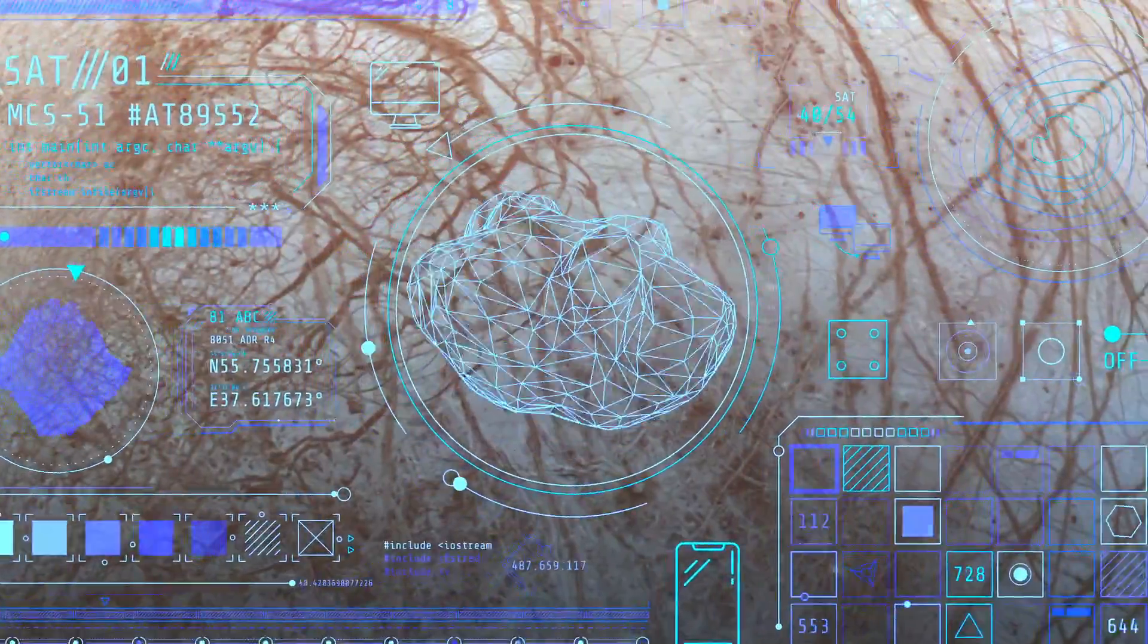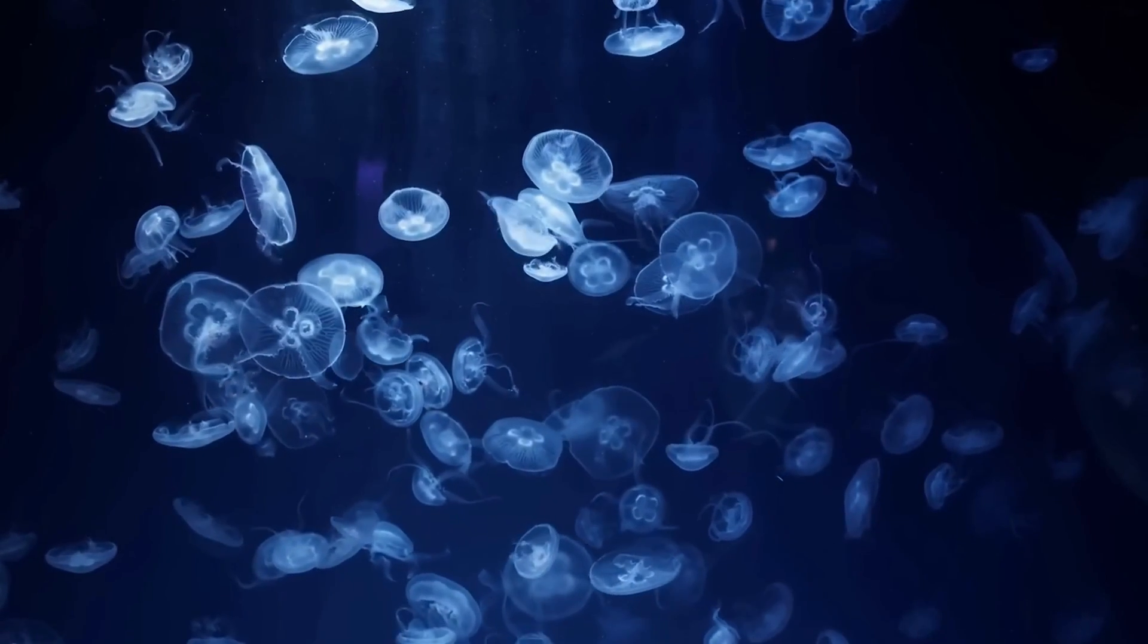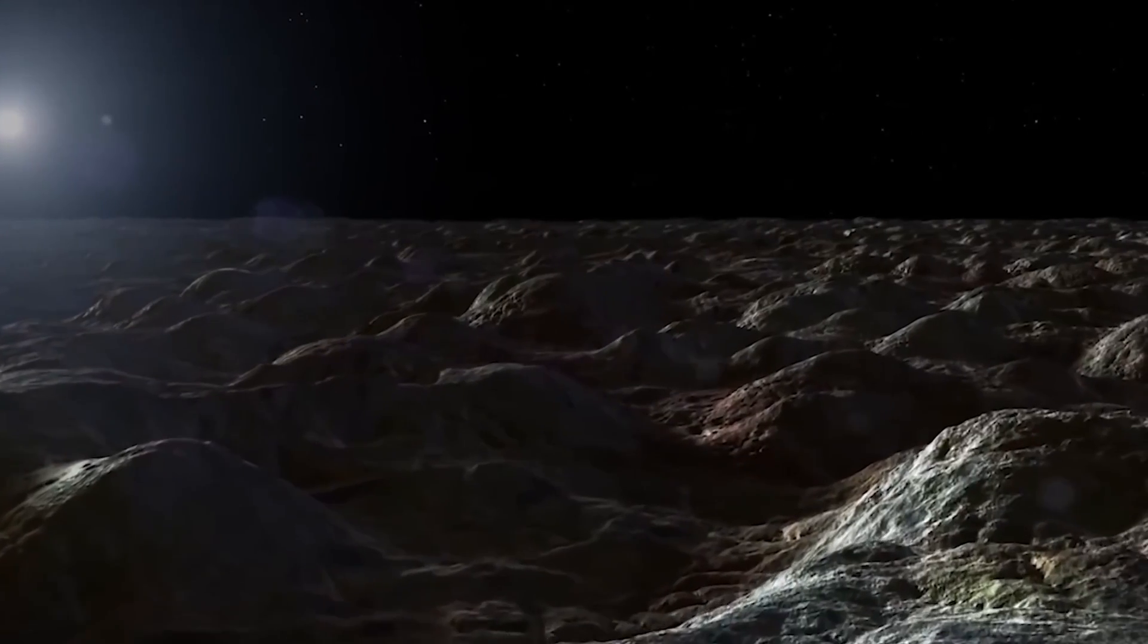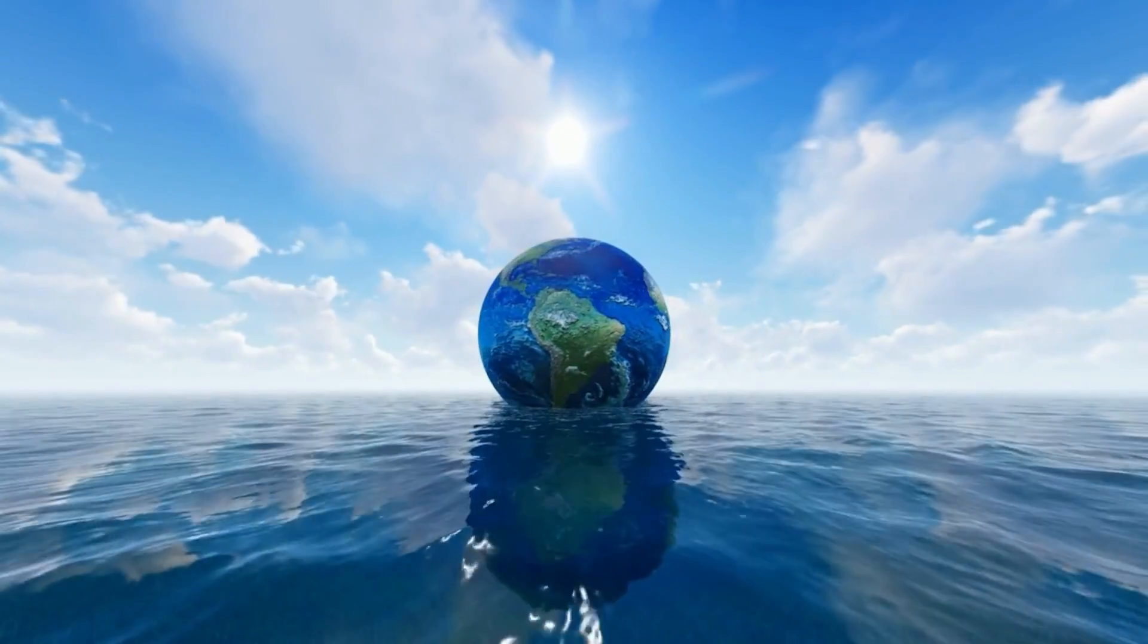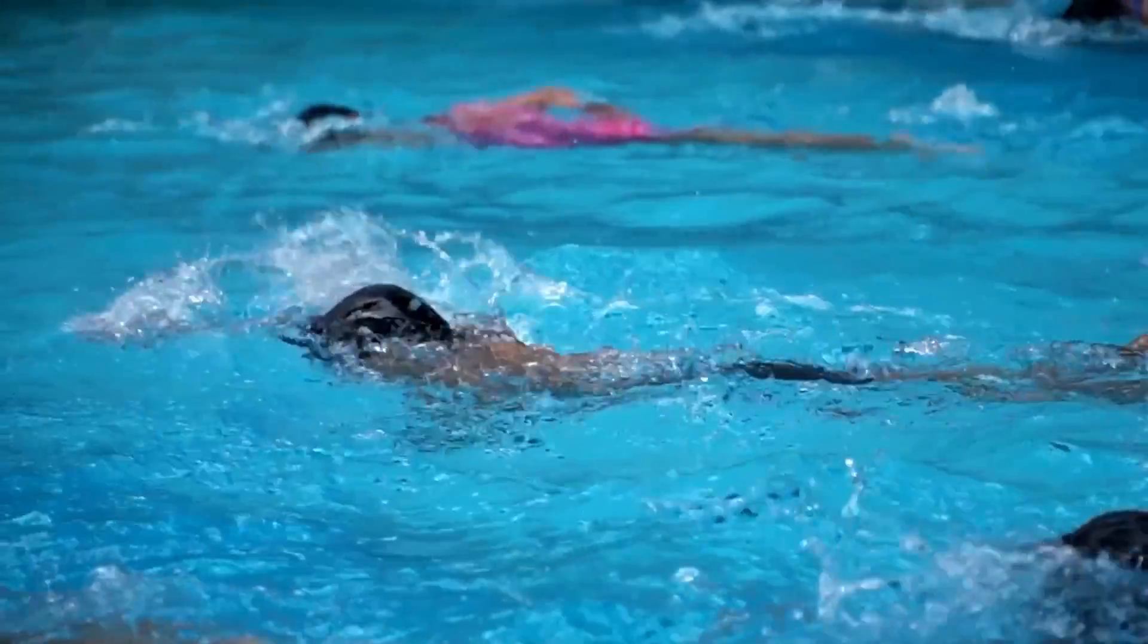Now Europa isn't just your average space rock. This little ice ball is one of the top spots in our solar system where we might find signs of life besides Earth. Europa's got a subsurface ocean under its icy crust, maybe even twice as much water as on Earth. Makes you wonder what could be swimming around down there, right?